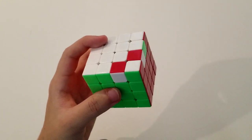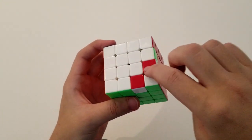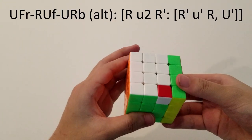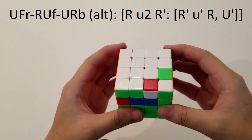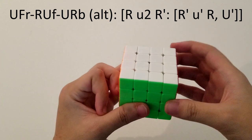So the other algs that people use that I think are quite good are bringing this out using R, U-wide 2, or U-slice 2 R-prime, puts this right here. And then we have an 8-mover, just like that.